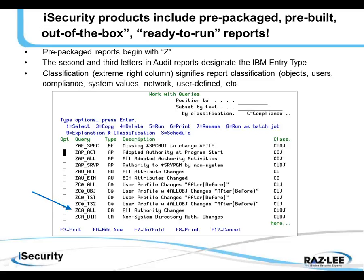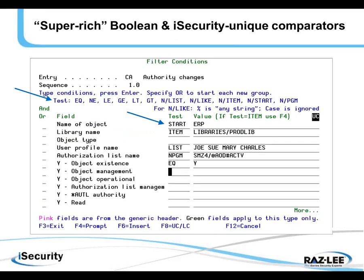The second and third letters of the prepackaged report name are the IBM entry type or the Rasly entry type — $A, $B, etc. We even provide a classification of the report on the extreme right, which can be searched later on: C meaning compliance, U for users, O for objects, J for jobs, etc.